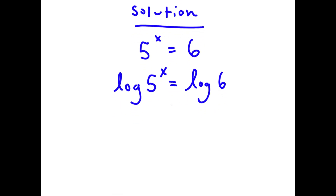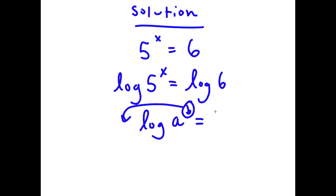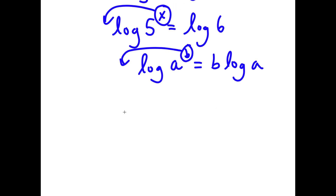Now, if I have something in the form log of a to the power of b, this is the same thing as moving the exponent to the front, so it equals b times log a. So in this case, I have log of 5 to the power of x, and I can move the exponent x to the front. This gives x times log 5 equals log 6.